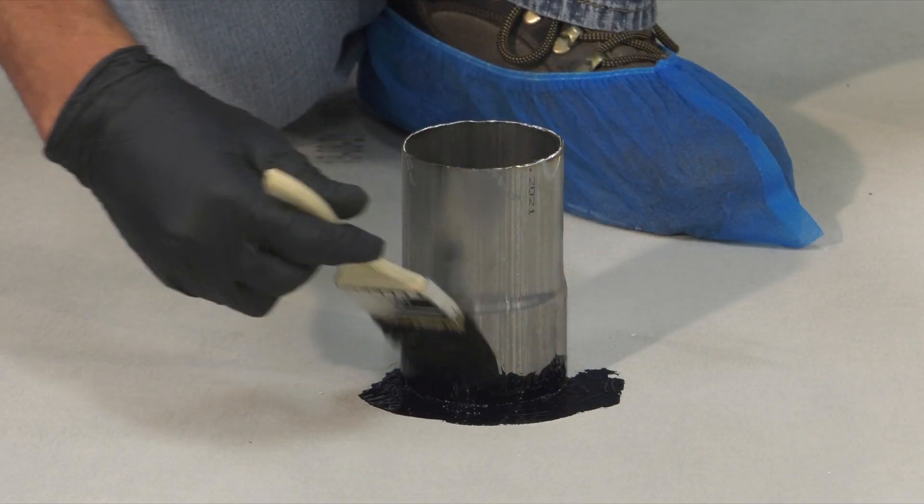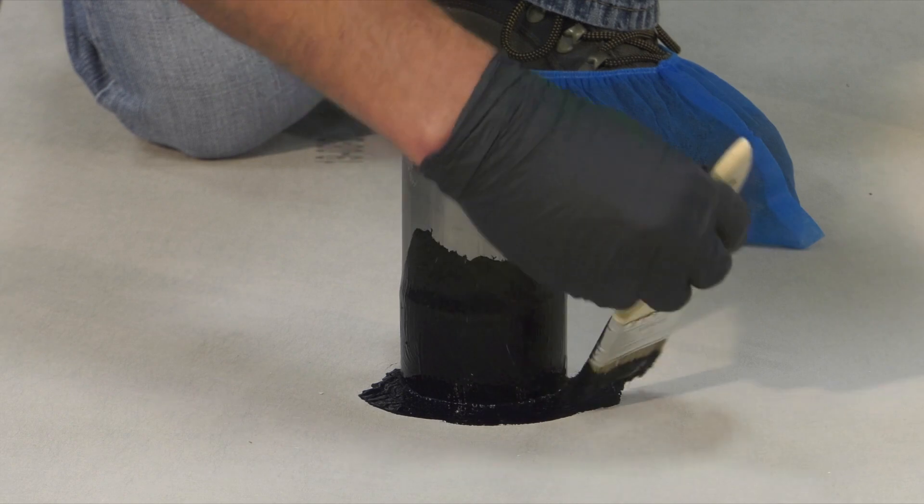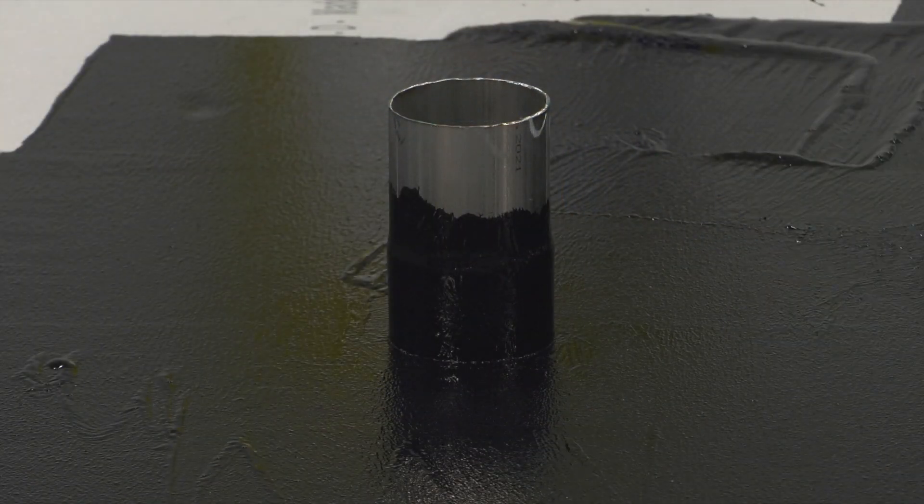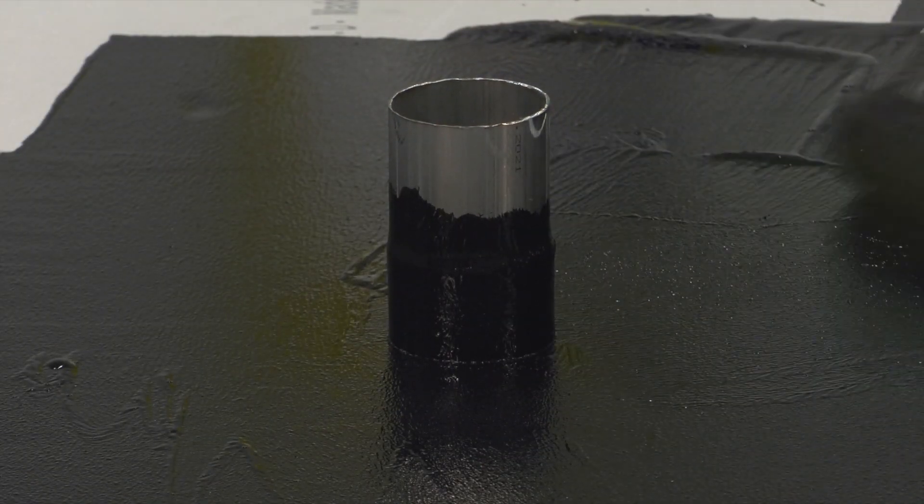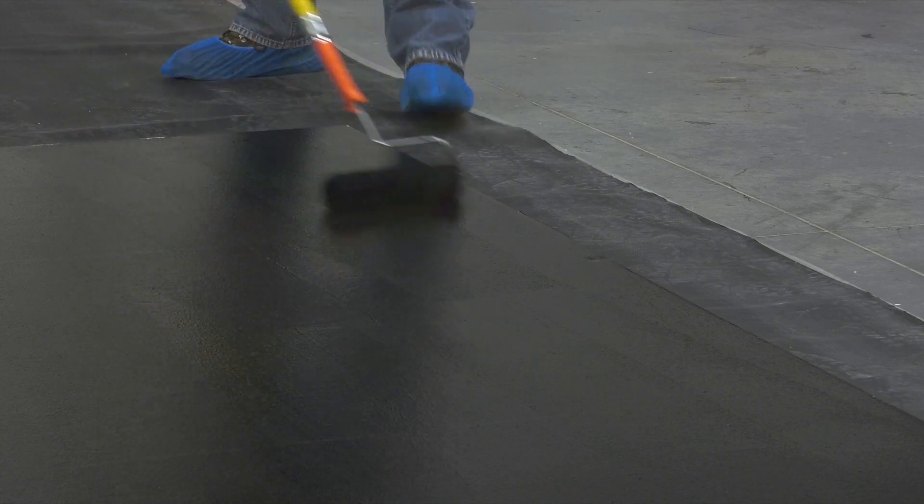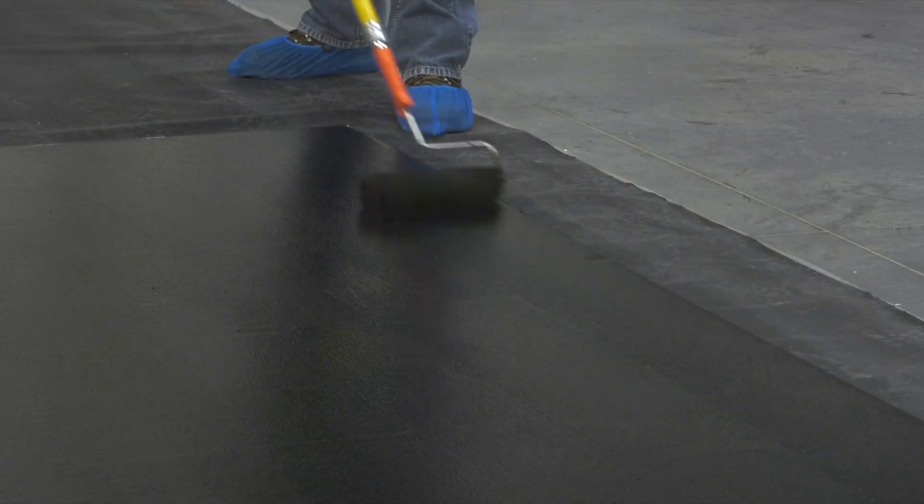True Ground must also be applied up and onto the side of all metallic penetrations, such as drains, anchors, and vents. This creates the continuous ground connection needed when performing ELD testing.